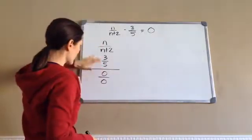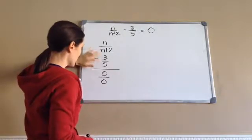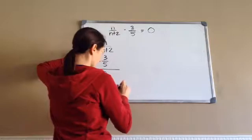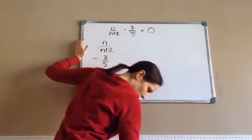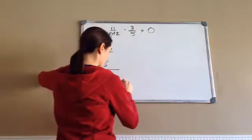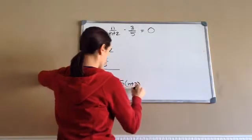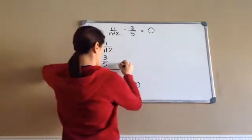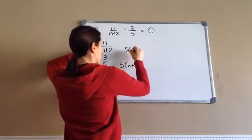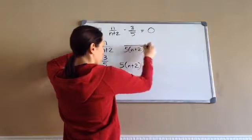Now, on this one, you still have to do it just like normal. So, N over N plus 2 minus 3 fifths equals, and I'm just going to make 0 over 0. Now, what do all three of these have in common? Well, it has to basically be 5 times N plus 2. So, that is our common denominator. I just took the 2 and put them together.